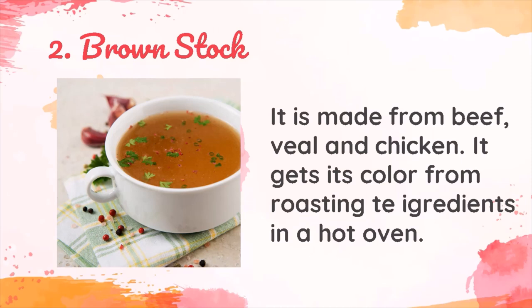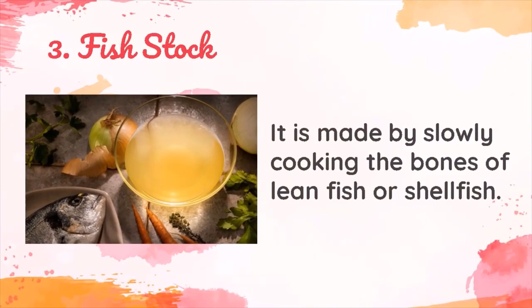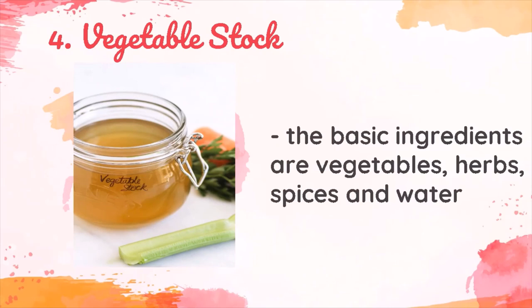Tomatoes or tomato products are combined to give a brown stock its color. This mixture is then transferred to a stock pot and simmered along with water and herbs. Fish stock is made by slowly cooking the bones of lean fish or shellfish. Vegetable stocks are an important addition to many healthful dishes. In addition, vegetable stock forms the base for many vegetarian and vegan dishes. The basic ingredients of a vegetable stock are vegetables, herbs, spices, and water.